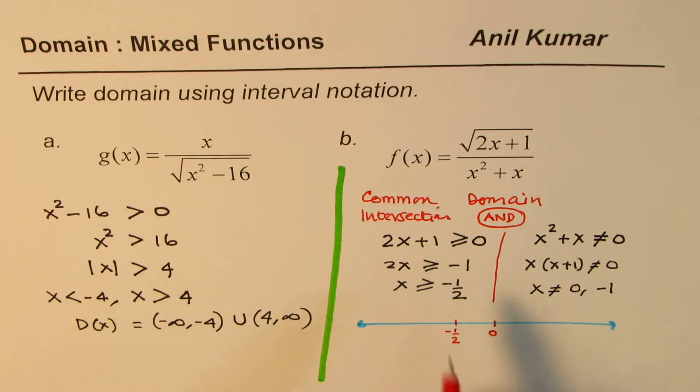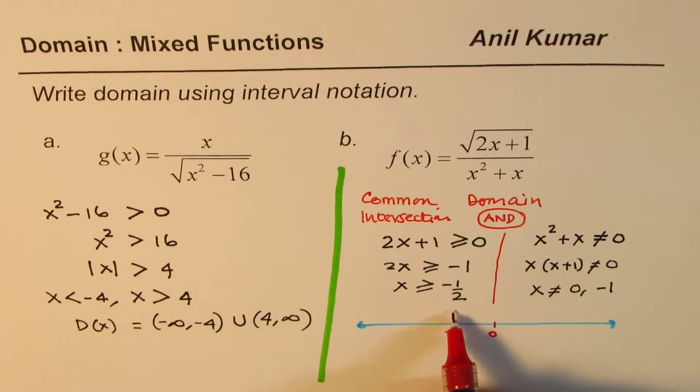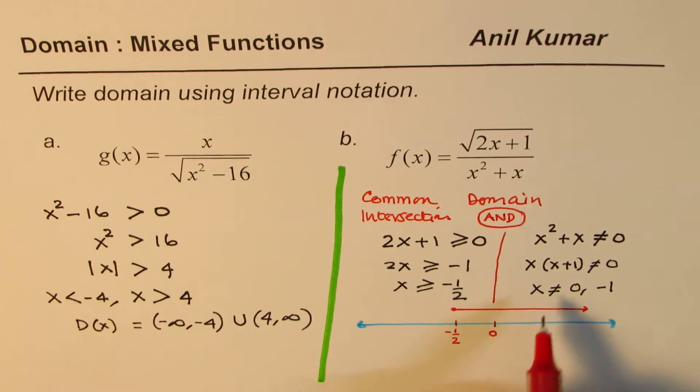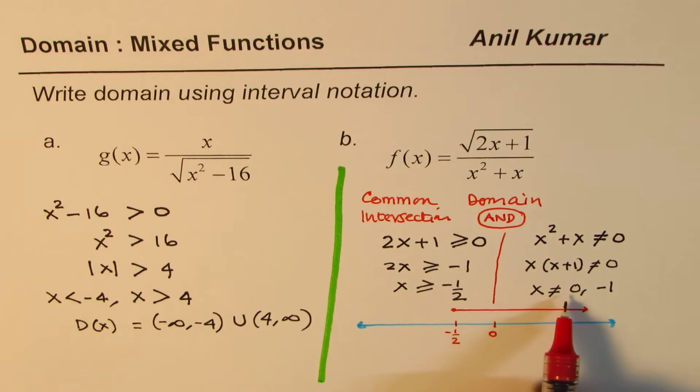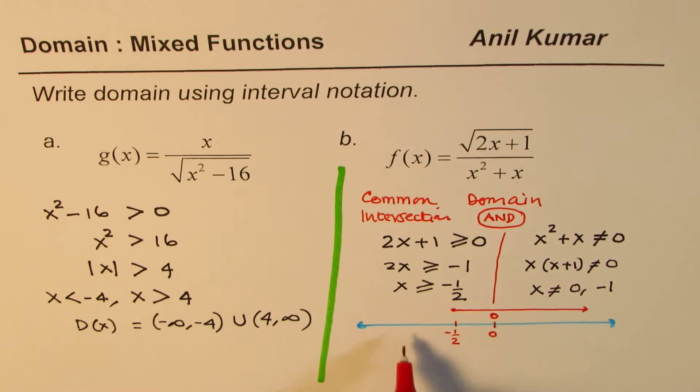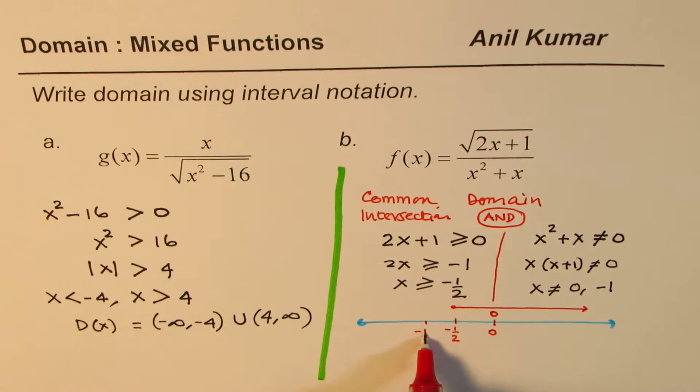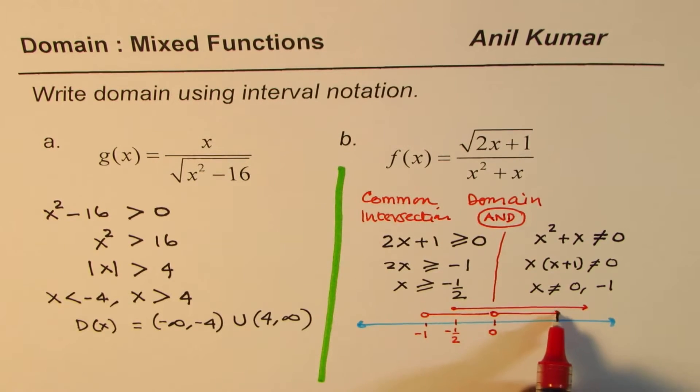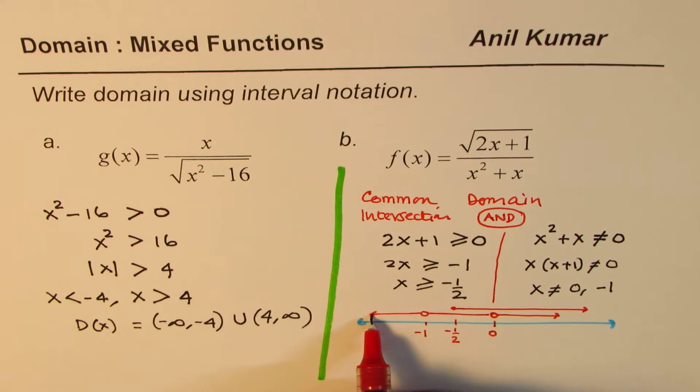When we say greater than or equal to, it means we include this and then it's on the right side. The other one says that x is not equal to 0, that means open circle for not 0, and it is not minus 1. But all other values are valid, do you see that all the values are valid?